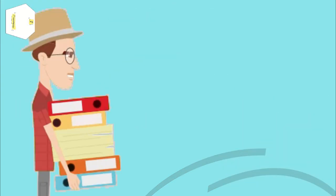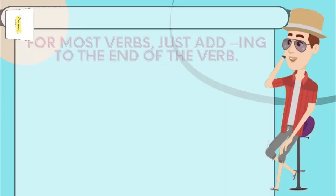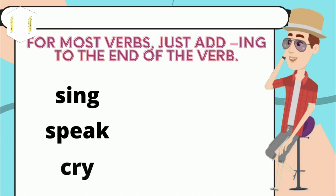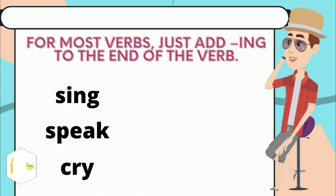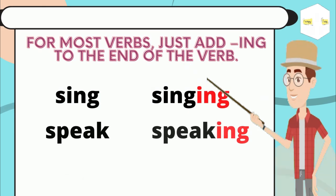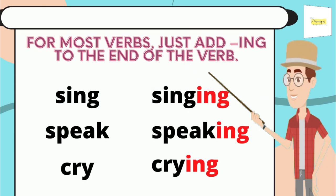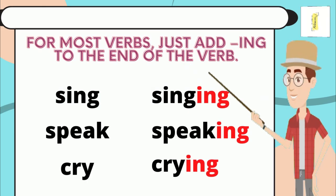Let's see how we form the suffix '-ing'. I have some rules. For the first one, for most verbs, you just add '-ing' to the end of the verb. Let's see: sing, speak, and cry — I will just add '-ing': singing, speaking, and crying.